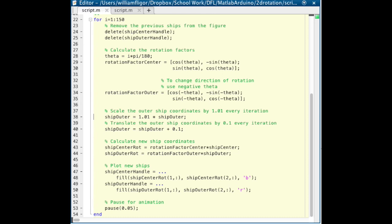Now, multiply ship outer by 1.01, and then add 0.1 to scale and translate the outer ship.